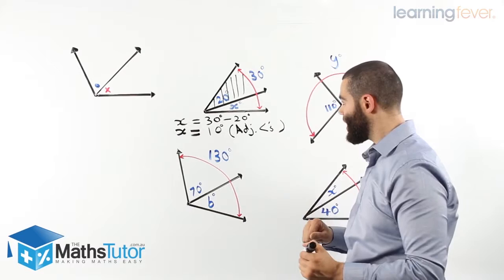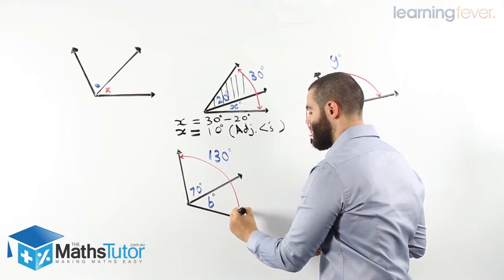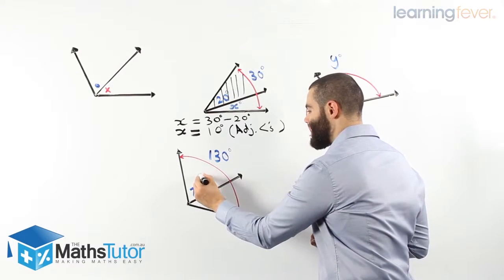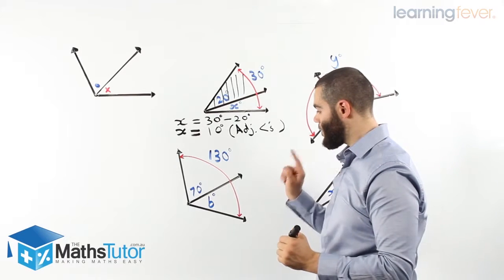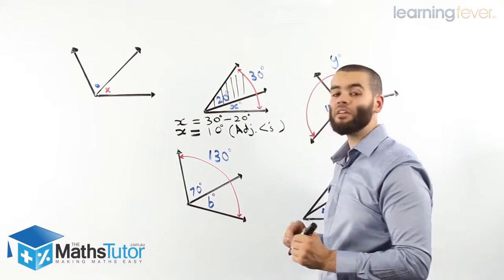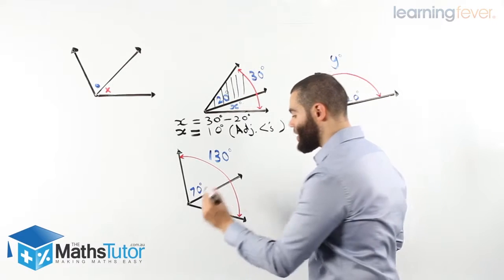We also realize that the total of both angles is 130 degrees. So this angle here, plus that angle there, total 130 degrees. However, we've been told that B is missing. This angle here is missing. So let's work it out.